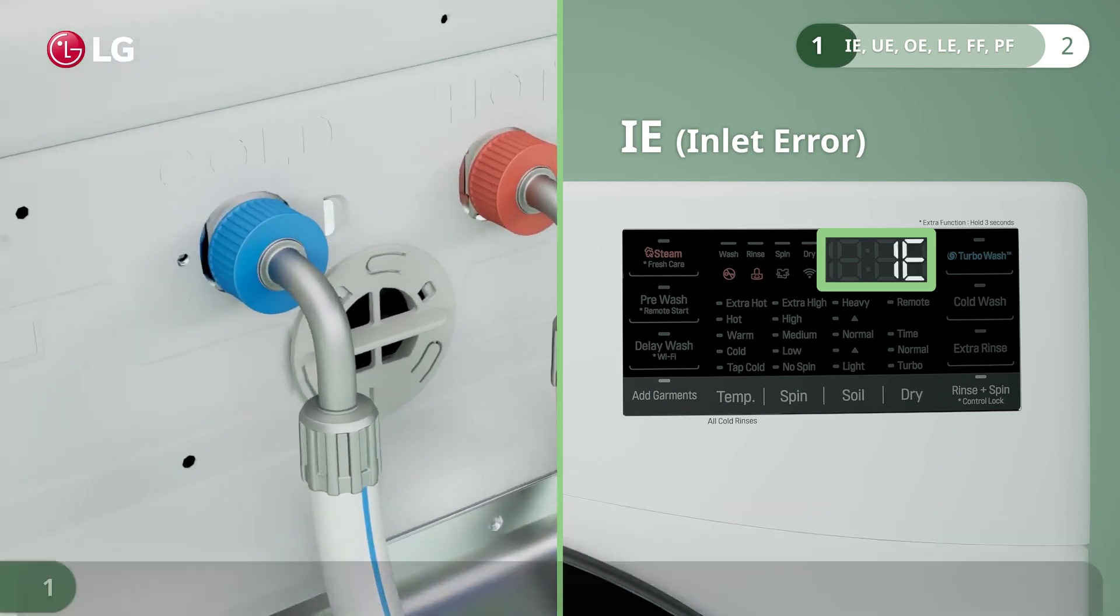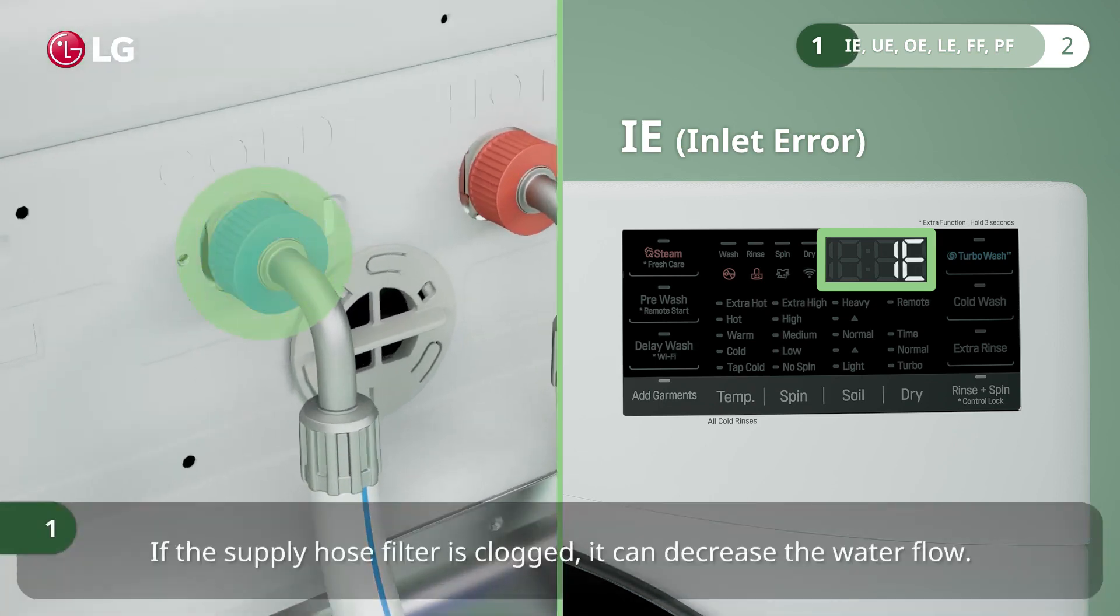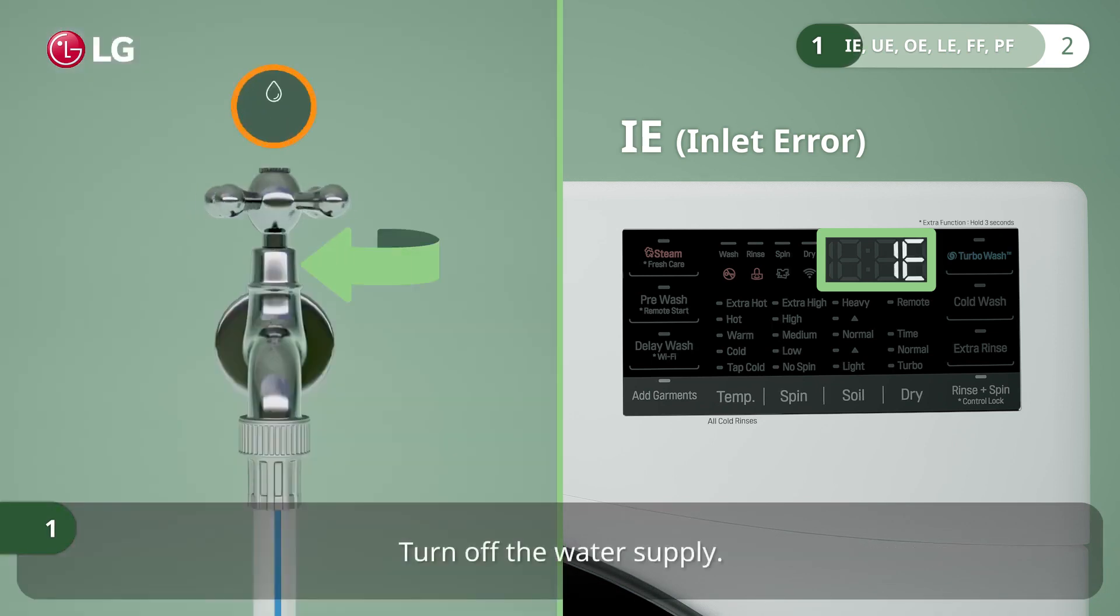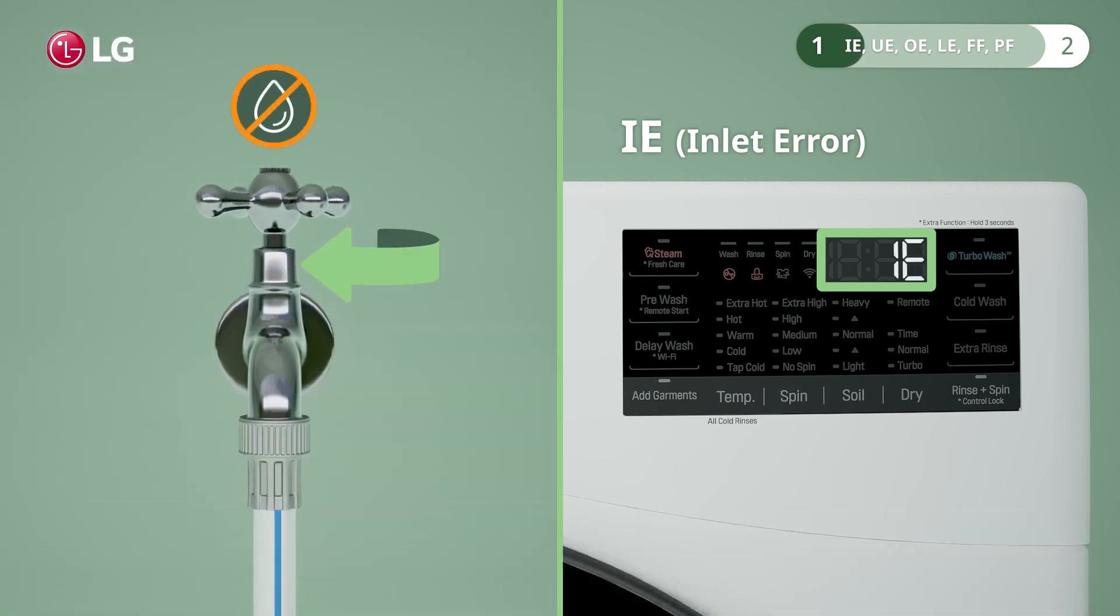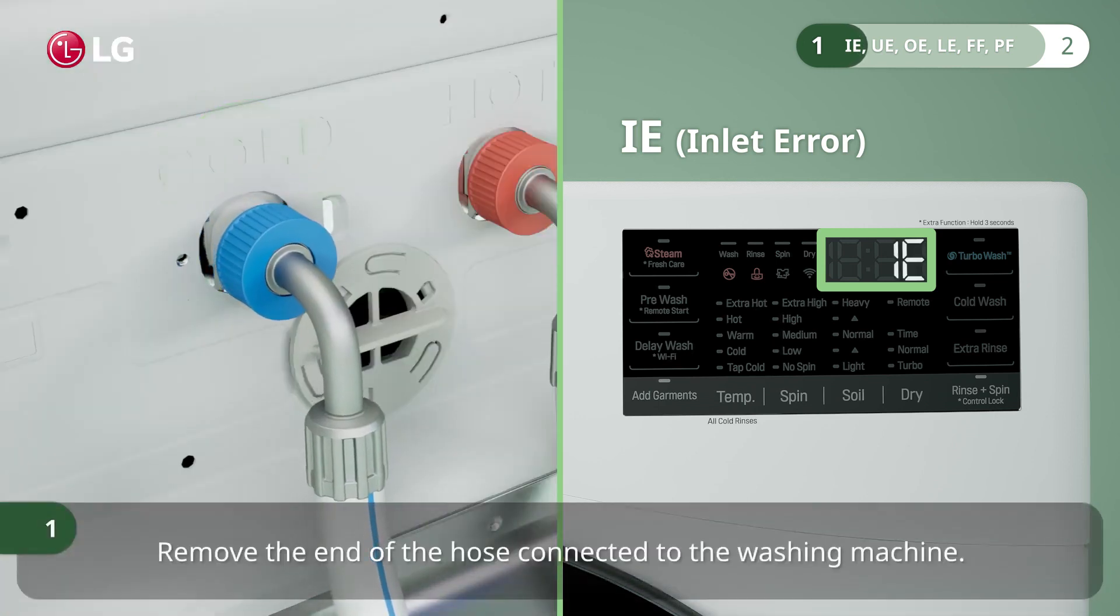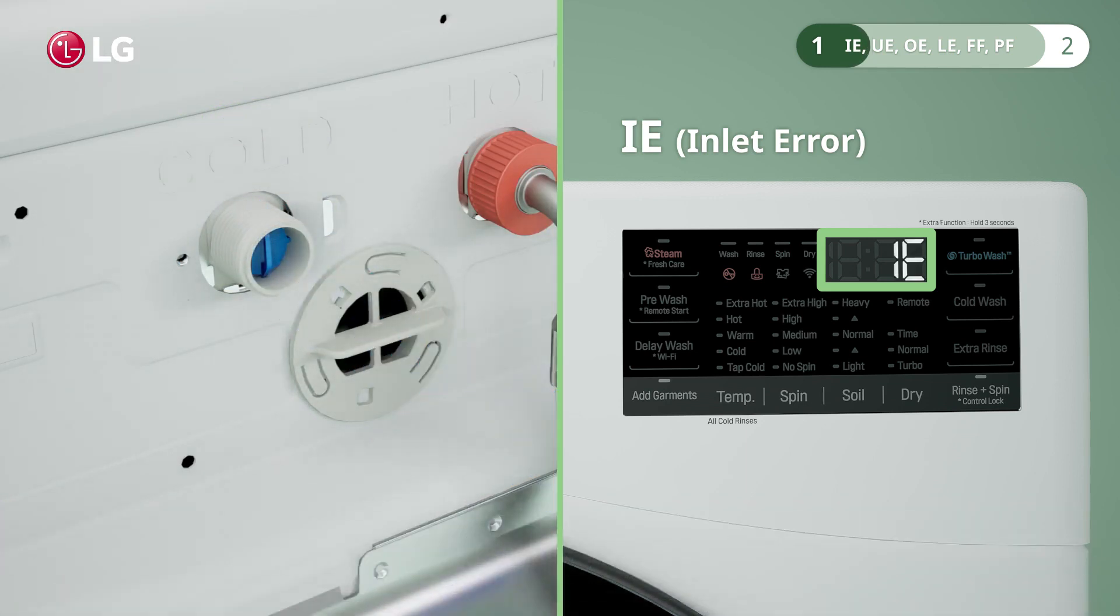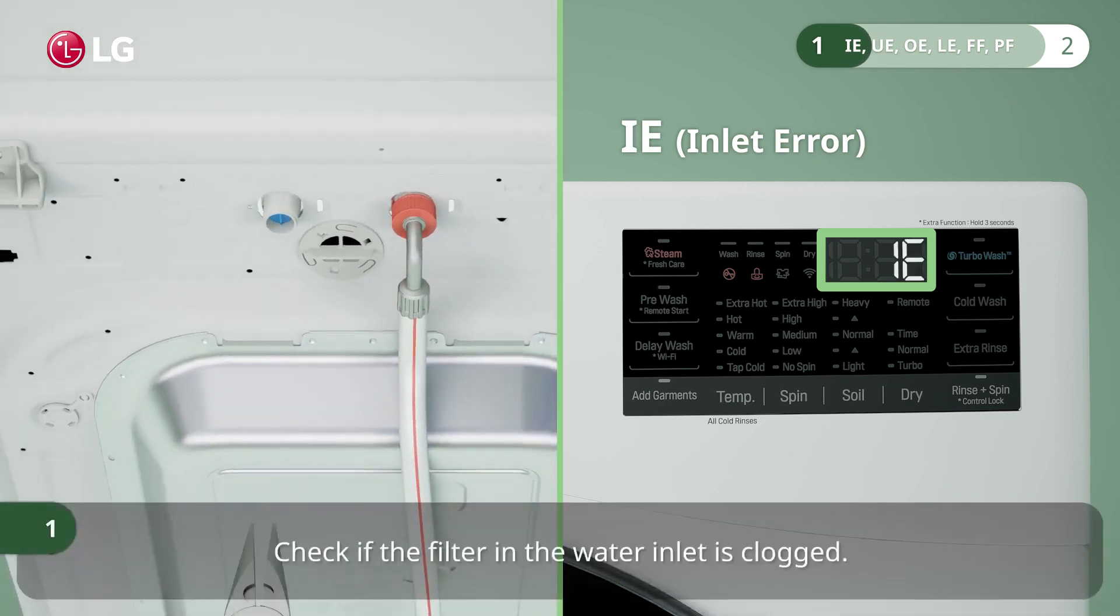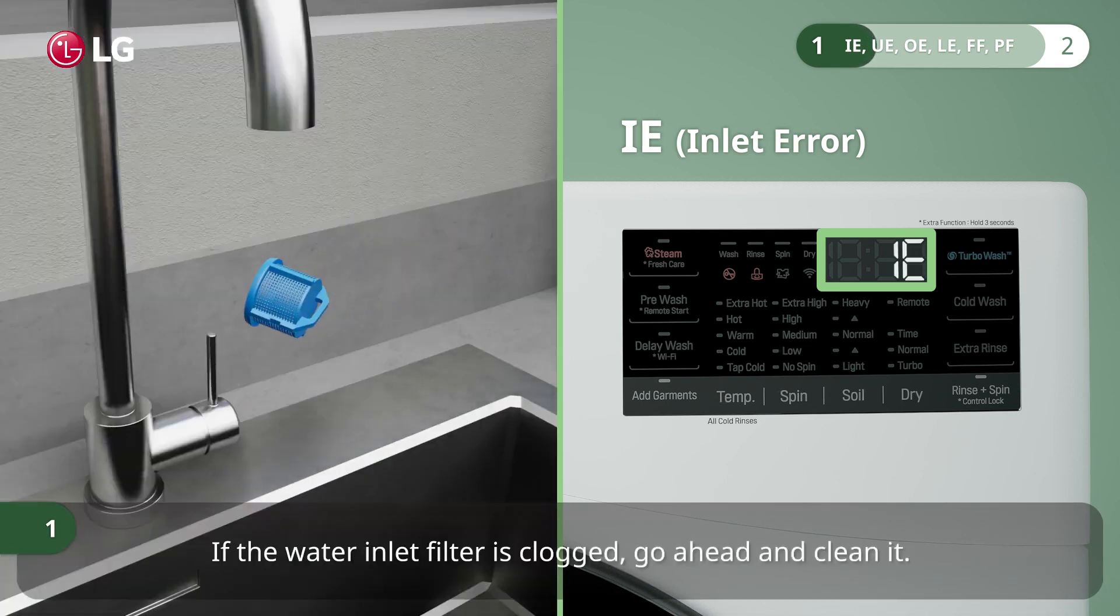If the supply hose filter is clogged, it can decrease the water flow. Turn off the water supply and remove the end of the hose connected to the washing machine. Check if the filter in the water inlet is clogged. If the water inlet filter is clogged, go ahead and clean it.